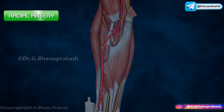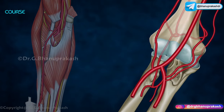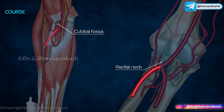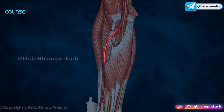Radial artery. The radial artery is a terminal branch of the brachial artery. It arises in the cubital fossa at the level of the radial neck. It descends towards the wrist with a lateral convexity.